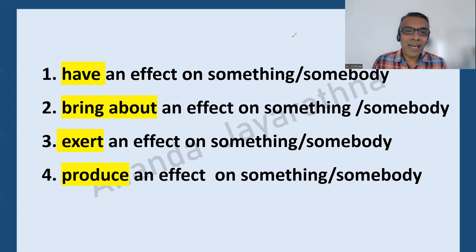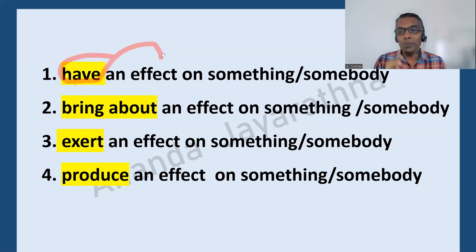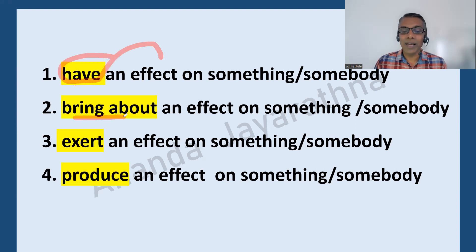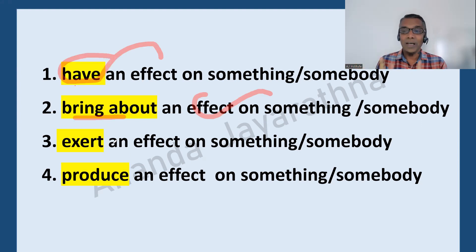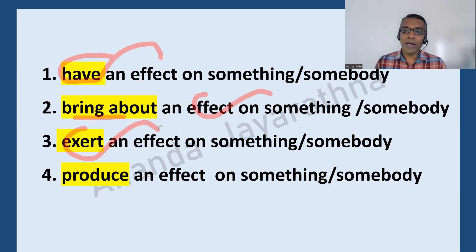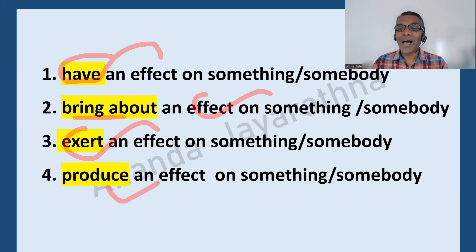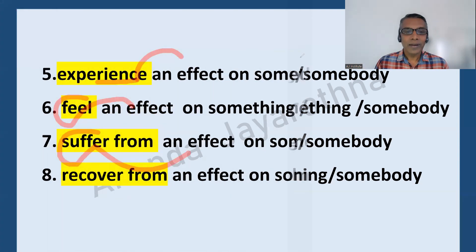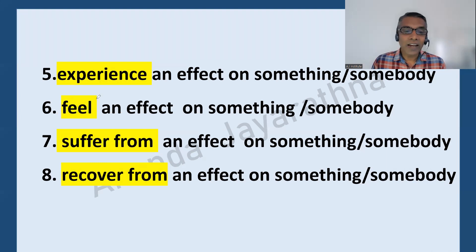Now we can look at verbs used with 'effect'. We can say 'have an effect on something', 'bring about an effect on something', 'exert an effect on something', 'produce an effect on something'. The fifth one is 'experience an effect on something'.